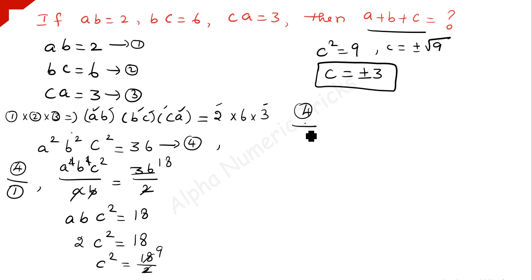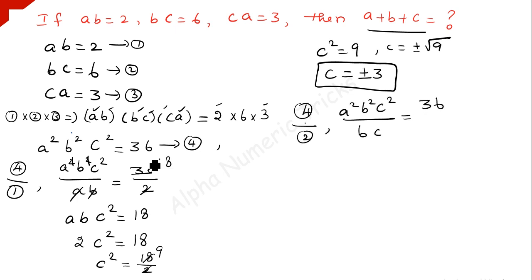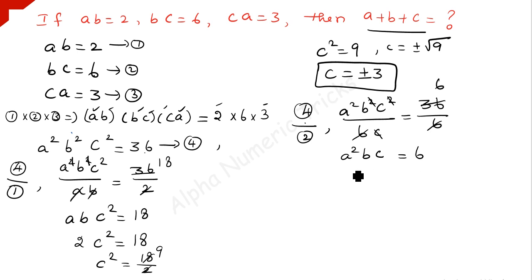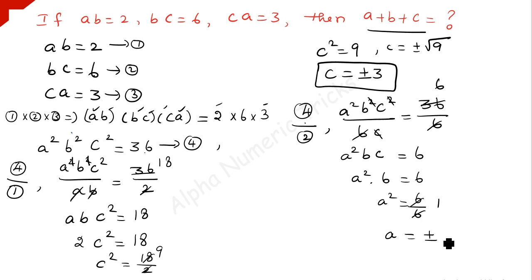Now divide equation 4 by equation 2. Equation 4 is A squared B squared C squared divided by BC, which equals 36 divided by 6. The BC terms cancel, so A squared times BC equals 6. But BC is equal to 6, so A squared times 6 equals 6, giving A squared equal to 1. Therefore A is equal to plus or minus 1.